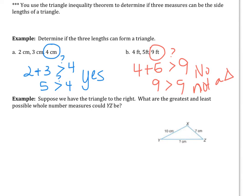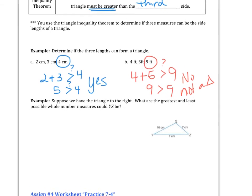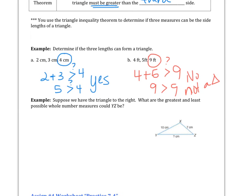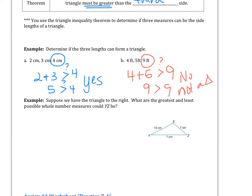Moving on to that next example here. Suppose we have triangle XYZ here on the right. What are the greatest and the least possible whole number measures that YZ could be? So we are going to look at the two sides that were given here, that 10 and that 7, and we're going to find out the least and the greatest side.